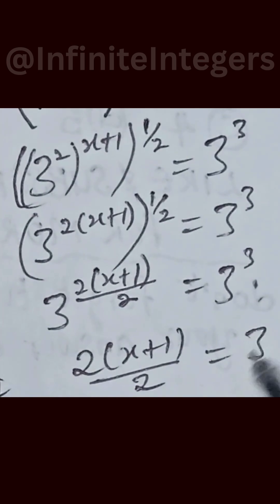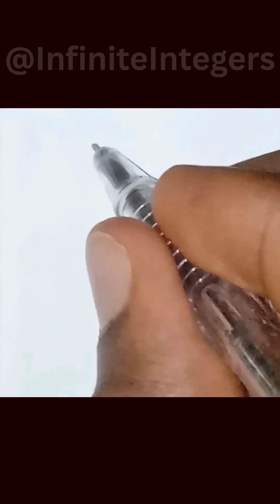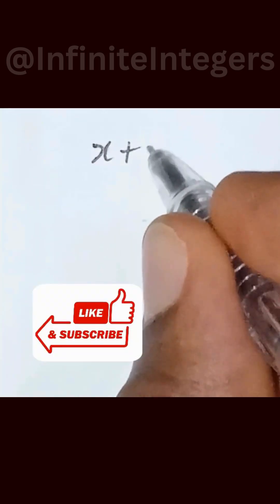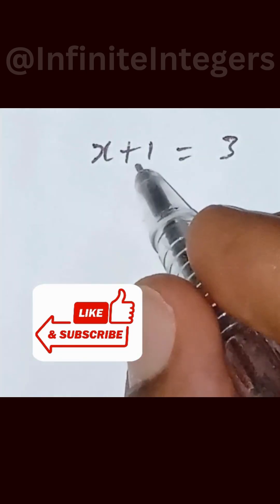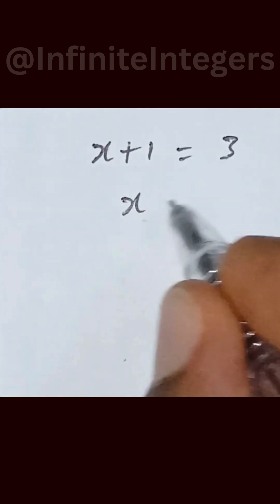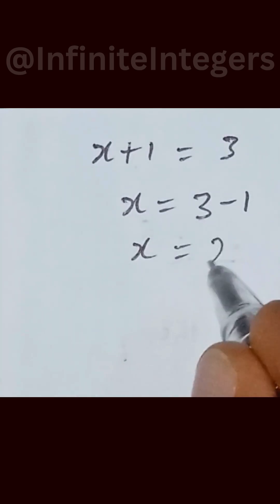Equal to 3. We are left with x plus 1 equal to 3. Then move this 1 to the right hand side, we have x equal to 3 minus 1, then x equal to 2 as our final answer.